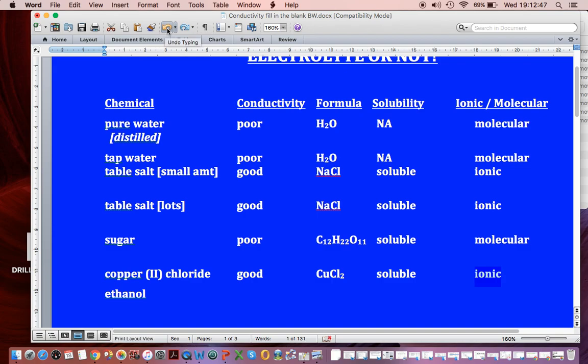Then we hit ethanol. And that is a form of alcohol. And it was poor. There's its formula, CH3CH2OH. It is soluble. But it is molecular.